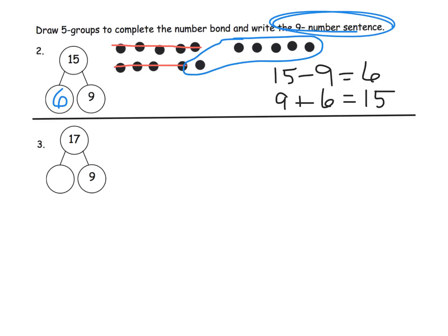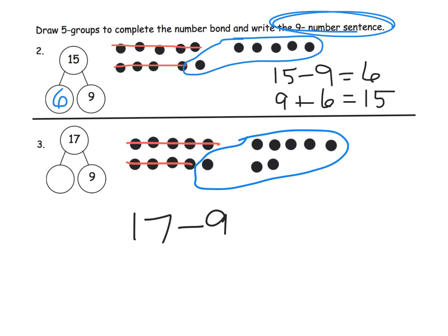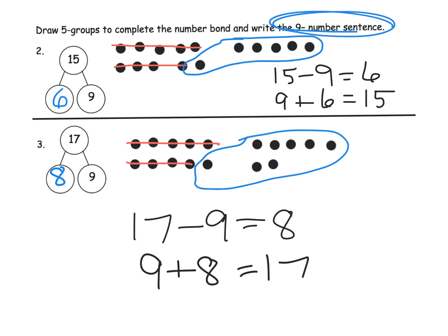For number 3, we have 17 and 9. First, we model the number 17. Now we subtract 9: cross off 5, then cross off 4. Our answer is the original 7 plus the one extra, so the number sentence is 17 minus 9 equals 8. Our missing value is 8. Remember, students could also write 9 plus 8 equals 17, and that would be great as well.